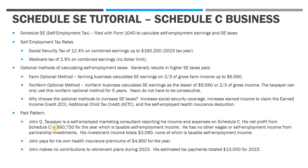Looking at the fact pattern: John Q. Taxpayer is self-employed and reports all income and expenses on Schedule C. His net profit from the business is $60,750 for the year, which is taxable self-employment income. He has no other wages or other self-employment income flowing through from partnerships. He does have some investment income, but investment income isn't subject to self-employment tax — only compensation is. He also paid $4,800 in health insurance premiums since as a self-employed person he covers his own health insurance.